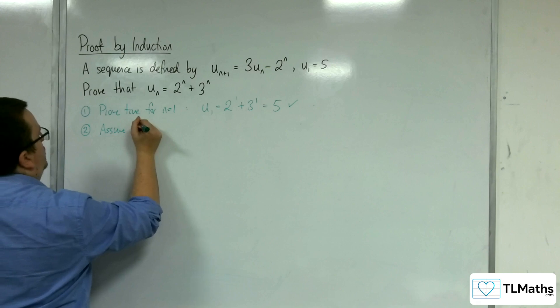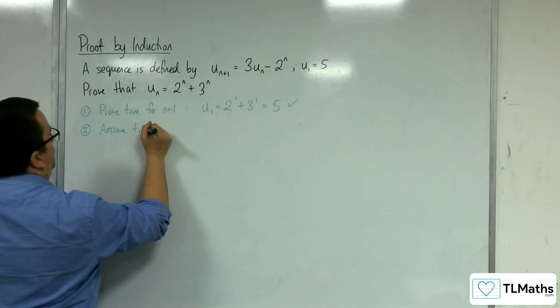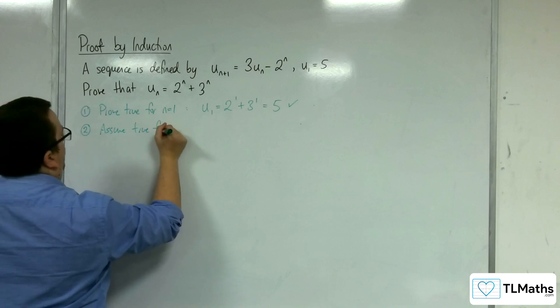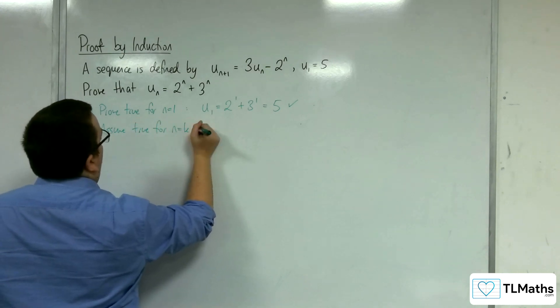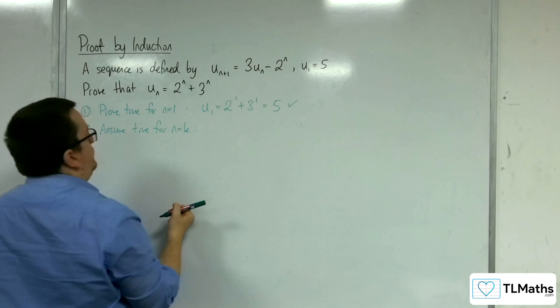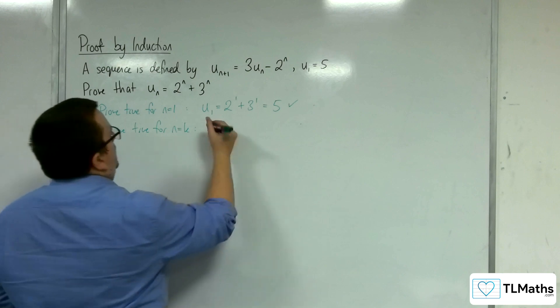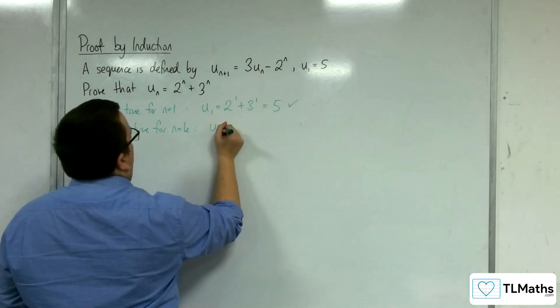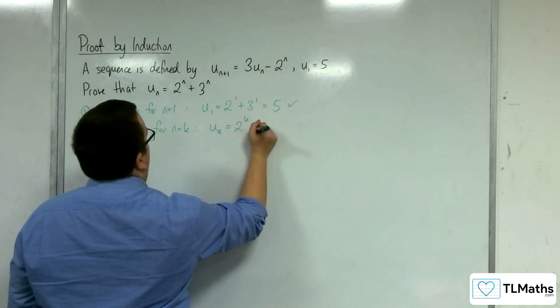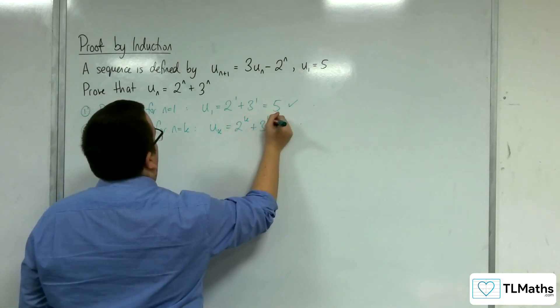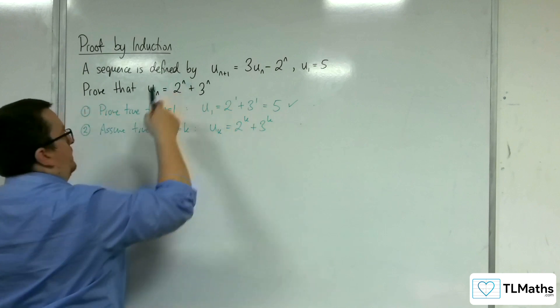We're going to assume it's true for n = k. So u_k would be equal to 2^k + 3^k.